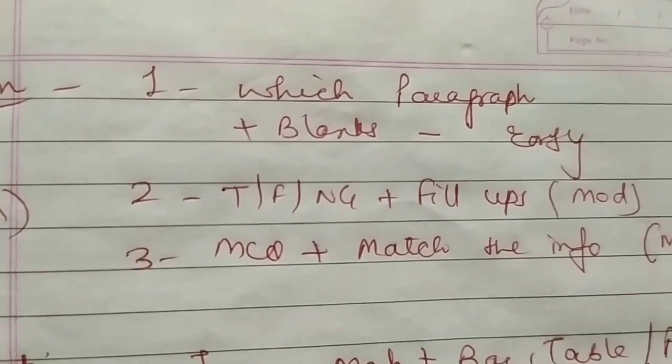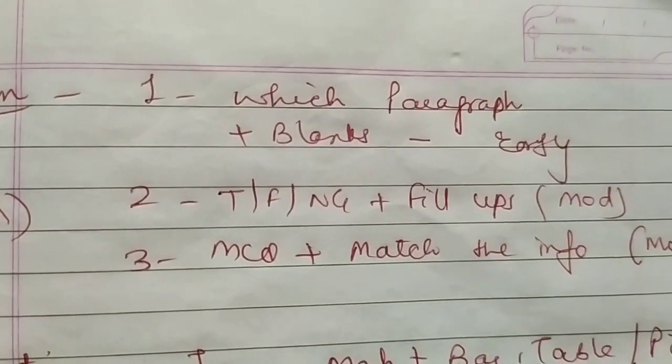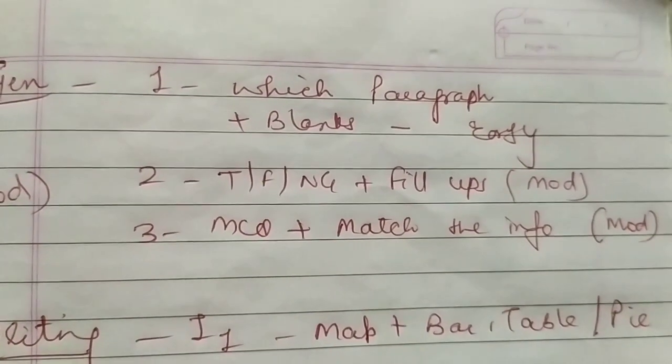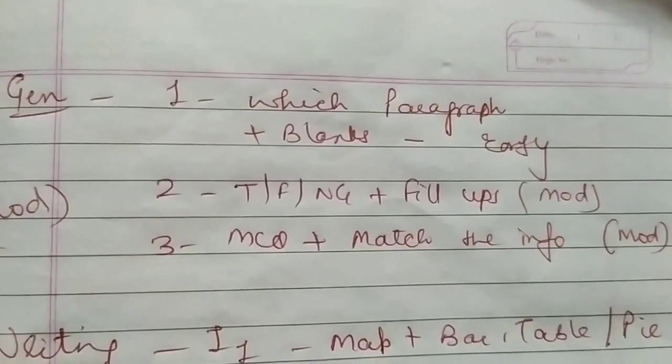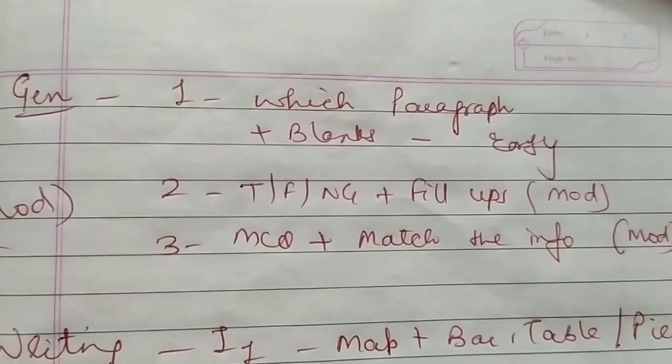Passage two will be true, false, not given and fill ups, and it is going to be moderate. Passage three will be MCQs and match the information, again moderate level. Overall, the reading will be moderate.